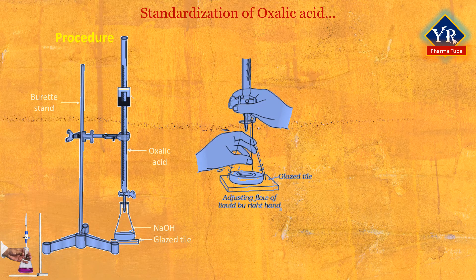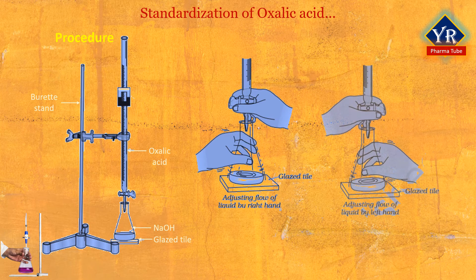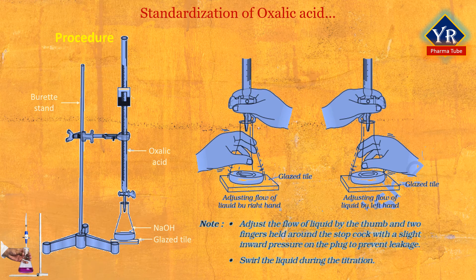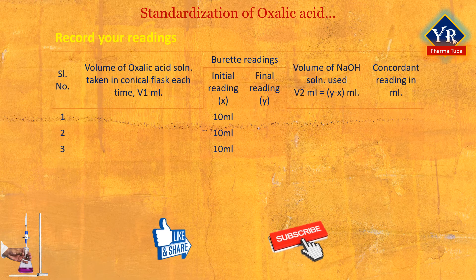Place the flask over the glazed tile as shown in the figure. Titrate the base with oxalic acid solution till a very faint permanent pink color is obtained. Add sodium hydroxide solution in small amounts initially and then drop wise. Read the lower meniscus of the solution in the burette again and record it as the final reading. Repeat the procedure until 3 concordant readings are obtained.